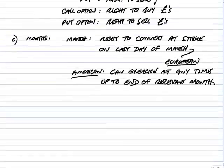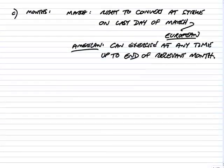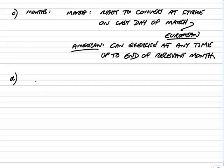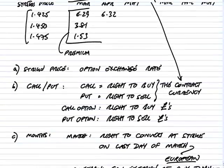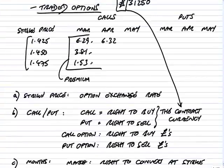There is a point I'll make later on which could be almost a bonus mark. Anyway, that's what the month columns mean. What are the numbers in the columns? These are the premiums. Depending on whether you're going for a call or a put, which month, and which strike price, the prices change: 6.29, 3.81, 1.53, and so on.